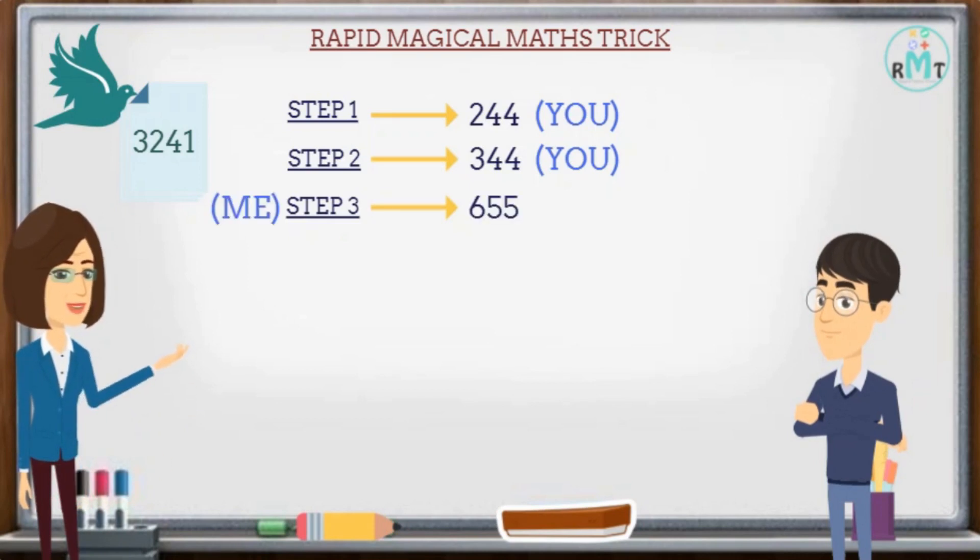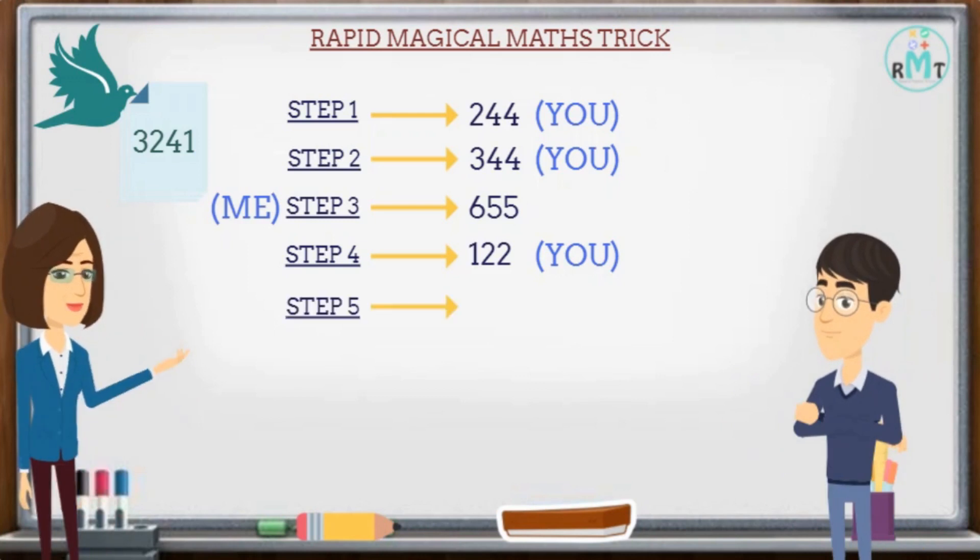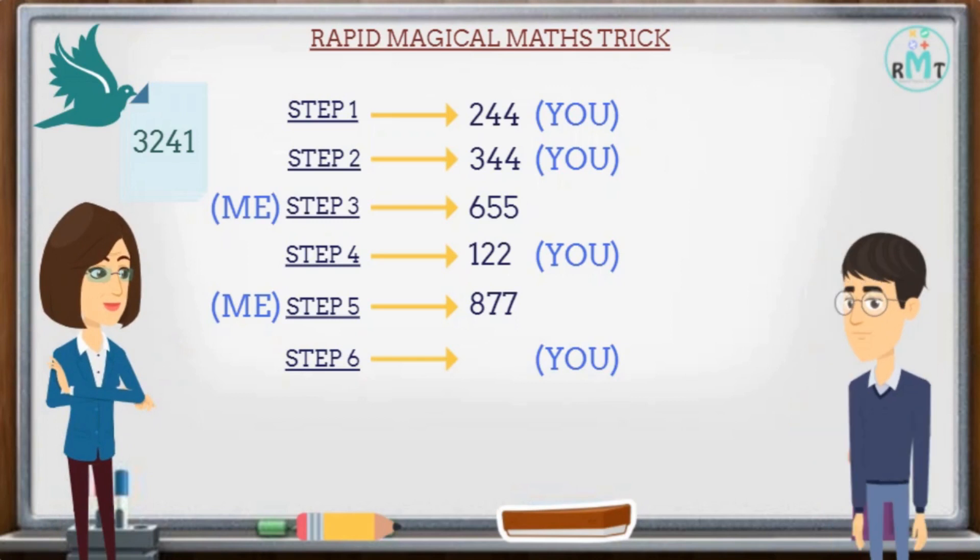is 655. Step four, again you write one more number. Okay, let the number be 122. Step five, now again I will take another three-digit number, that is 877. Step six, again you write one more number. Okay, let